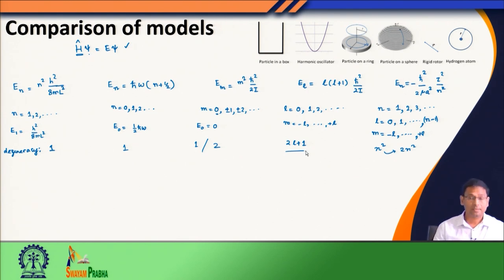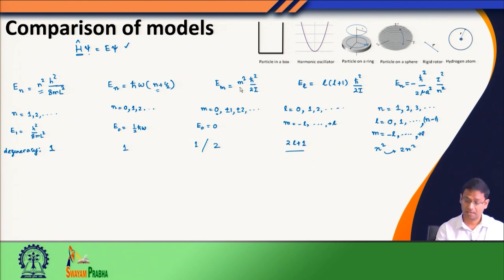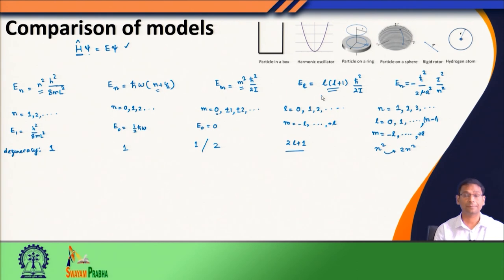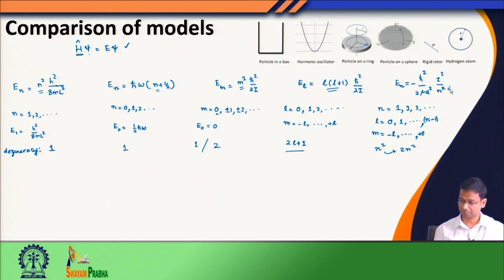Comparing the energy-quantum number dependence across models: particle in a box has n squared dependence; harmonic oscillator has linear n dependence; particle in a ring has m squared dependence; particle in a sphere has l(l+1) dependence; and hydrogen atom energy is a function of 1 over n squared. The degree of degeneracy and the functional dependence on quantum numbers both keep changing as we move from one model to the next.